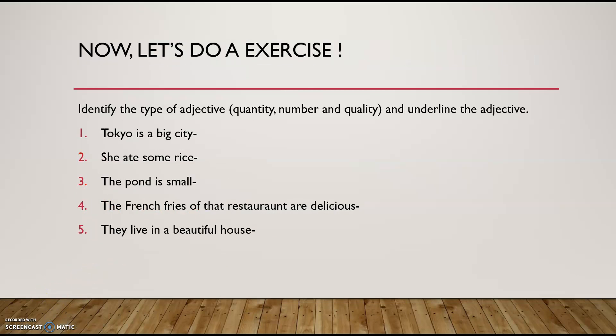Now, let's do a fun exercise. Identify the type of adjectives — quantity, number, and quality — and also underline the adjectives. You can write this in your copy so that you can remember what adjectives are. Number one: Tokyo is a big city. Number two: She ate some rice. Number three: The pot is small. Number four: The french fries of that restaurant are delicious. Number five: They live in a beautiful house.